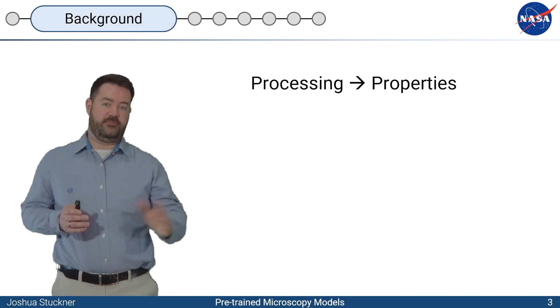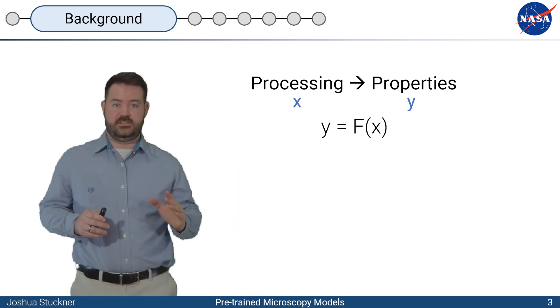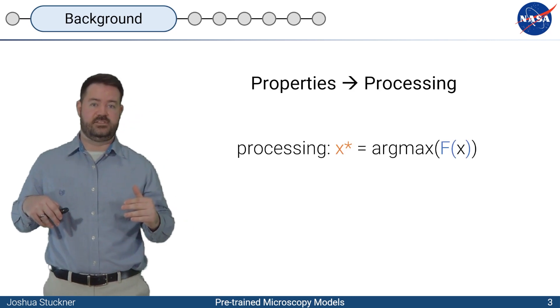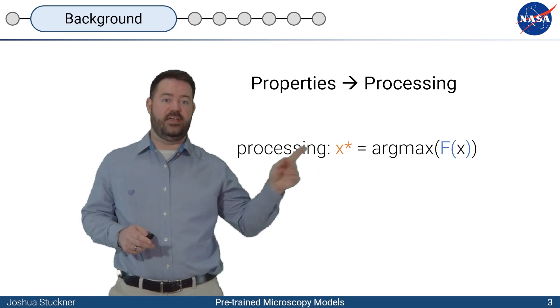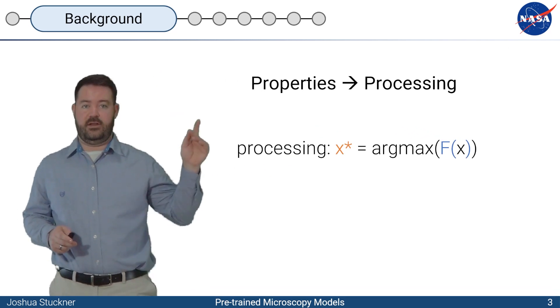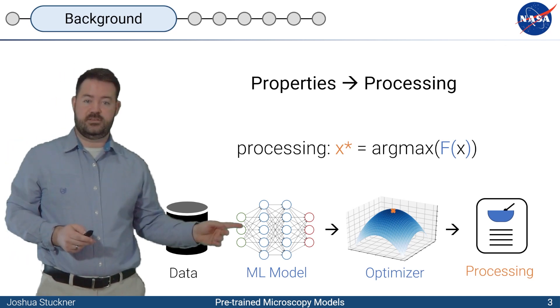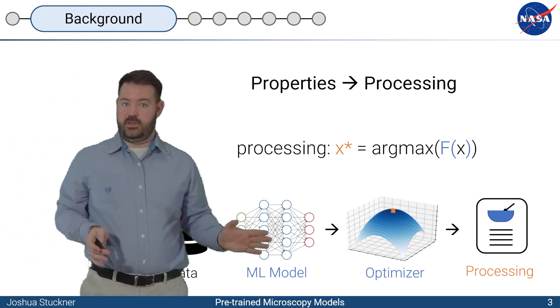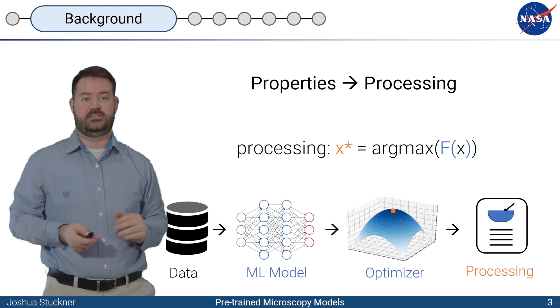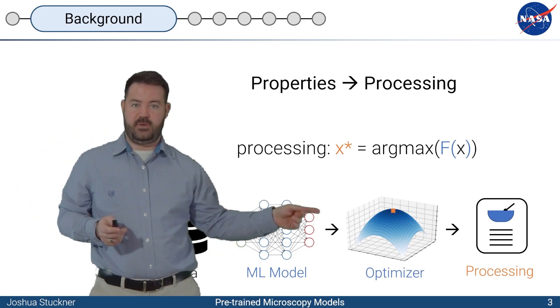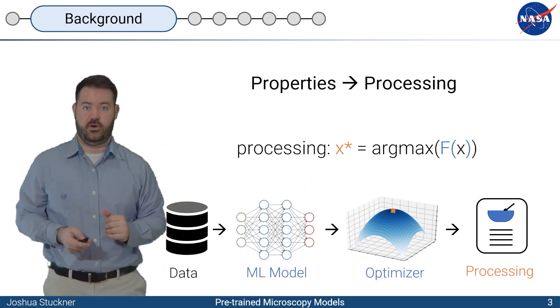The way we make a material affects the properties of the material where properties are a function of the processing. But recently with advances in materials informatics and data-driven tools, we're able to flip this around and design fit-for-purpose materials where we start with the properties and solve this optimization problem and find the processing steps that would give us the most information about hitting that target property.